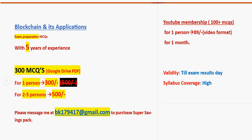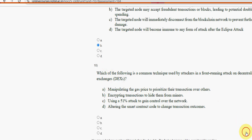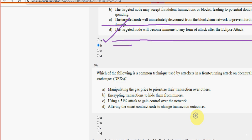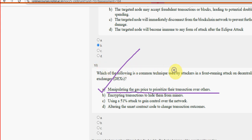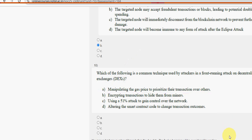For the 10th and final question, option A is the probable solution — manipulating the gas price to prioritize the transaction over others. So mark option A.